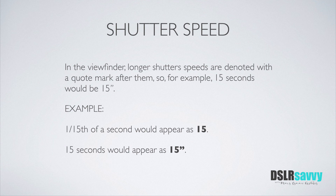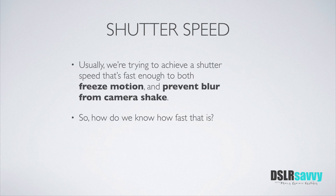There's probably an official name for that quote mark or inch mark, but I honestly don't know what it is — so if anyone happens to know, I'd be happy to hear it. Now that we've talked about how to read shutter speed notations, let's talk about why we usually need a fast-ish shutter speed rather than a slow one. Usually with most everyday photography, we're trying to achieve a shutter speed that's fast enough to do two things: freeze motion and prevent blur from camera shake. A shutter speed that is too slow can prevent us from getting a sharp, crisp picture.